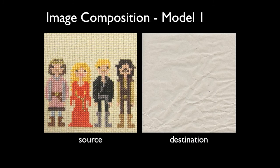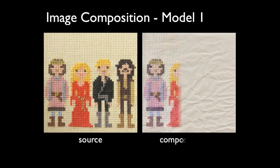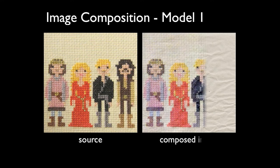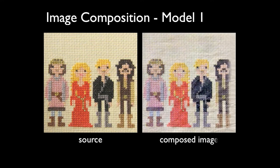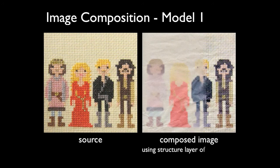Composing a textured image directly onto another image may give undesirable results, since the texture information is transferred along with the structure information. On the other hand, performing the composition using the extracted structure layer leads to a more plausible result.